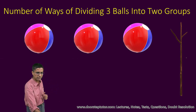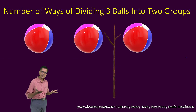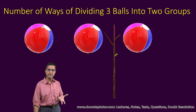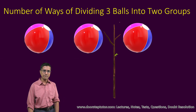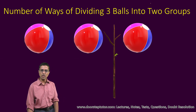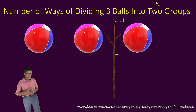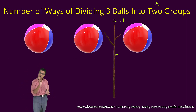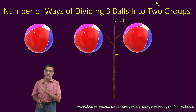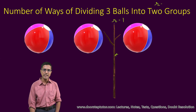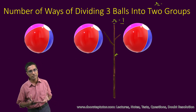Another possible way could be this arrangement — with the stick and the balls arranged differently. So if I had a total of r groups, I would use r minus one sticks. In this case I had to divide into two groups, so I needed only one separator — that is two minus one. If I have to divide things into r groups, I need r minus one separators.